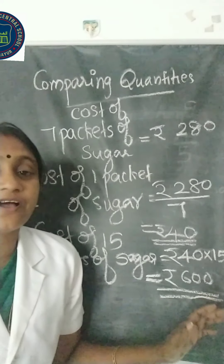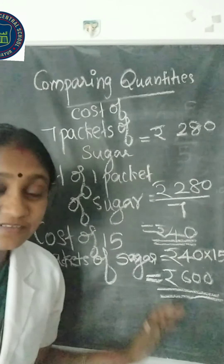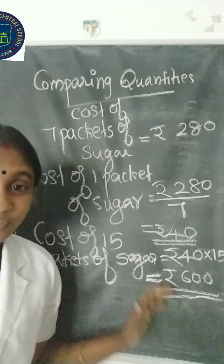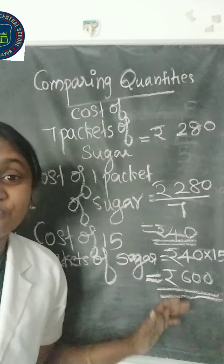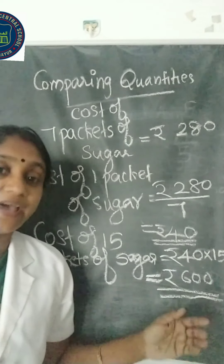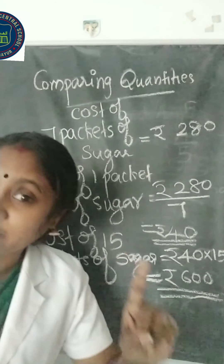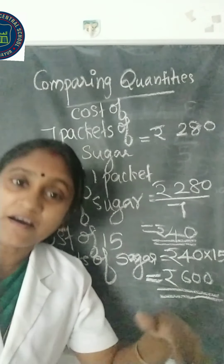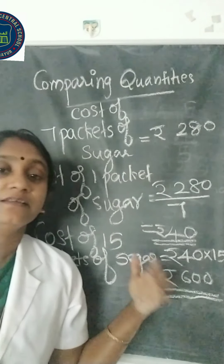This method is called the unitary method. In the unitary method, we first find the value for 1 unit, and after that we multiply by the required number.